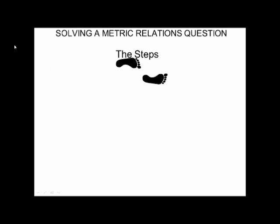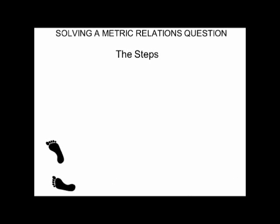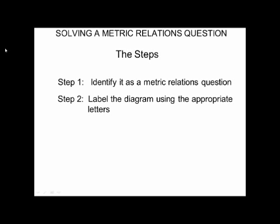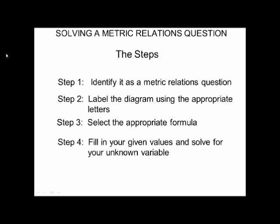Let's look at how to solve a metric relations question. First, identify it as a metric relations question — you'll see the right-angle triangle with the height drawn in. Second, label the diagram using the appropriate letters. Third, select the appropriate formula by looking at the information you have and the information you want. Finally, fill in the given values and solve for the unknown variable.